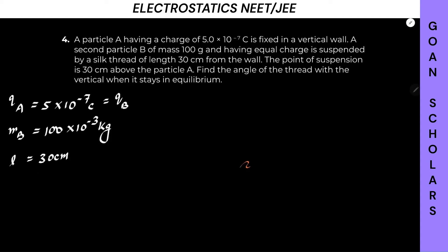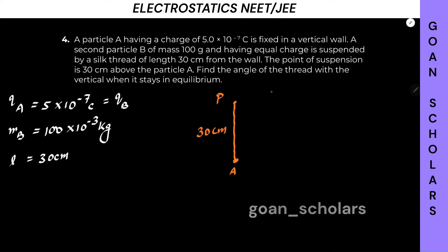Let's draw the diagram now — pay attention because it will help you understand the question better. Let's say this is point A where particle A is placed, with charge 5 × 10⁻⁷ at this point. The question says the point of suspension is 30 centimeters above particle A. So from here, let's mark this as point P, the point of suspension, with 30 centimeters separation. This is our vertical wall.